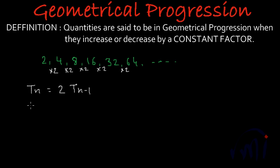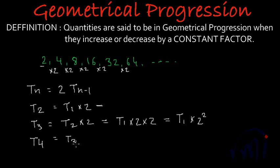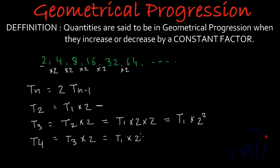If we talk about the second term T2, this is actually the first term T1 multiplied by 2. And T3 is actually T2 multiplied by 2, and from this equation I can write T2 in terms of T1. So this can be written as T1 multiplied by 2, multiplied by 2, which equals T1 multiplied by 2 squared. And what we have found T3 as? We have found it as equal to T1 multiplied by 2 squared.